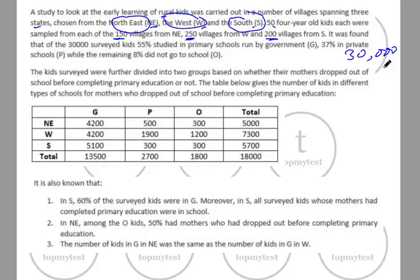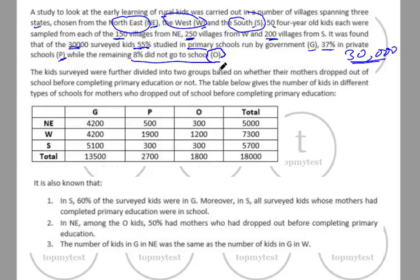So 600 × 50 = 30,000 students were surveyed. Out of the 30,000 surveyed kids, 55% studied in government schools (G), 37% in private schools (P), and the remaining 8% did not go to school (O). 37 + 8 = 45, and 45 + 55 = 100%, so this is the full distribution.